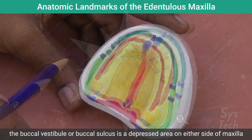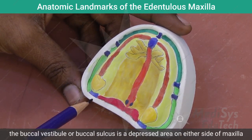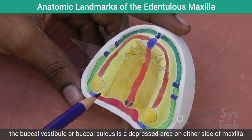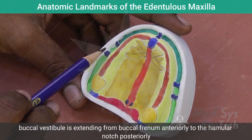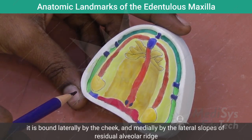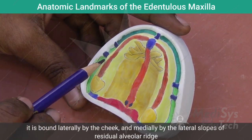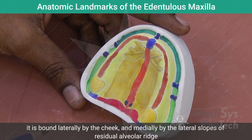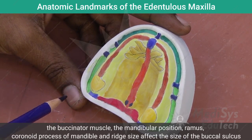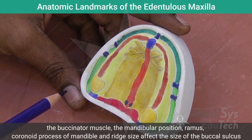The buccal vestibule or buccal sulcus is a depressed area on either side of the maxilla, extending from the buccal frenum anteriorly to the hamular notch posteriorly. It is bound laterally by the cheek and medially by the lateral slopes of the residual alveolar ridge. The buccinator muscle, mandibular position, ramus, coronoid process of the mandible, and alveolar ridge size all affect the size of the buccal sulcus.